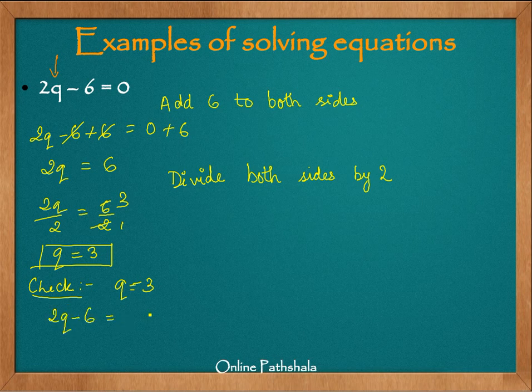We do so by substituting q equals 3 in this equation. That is 2q minus 6. So we have 2 into 3 minus 6 or we have 6 minus 6 which gives us 0 which is nothing but the right hand side.